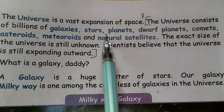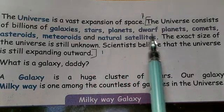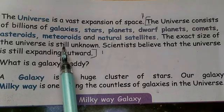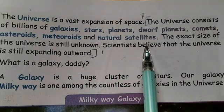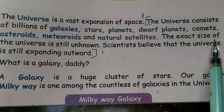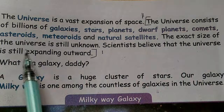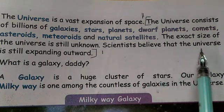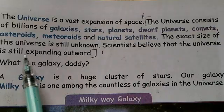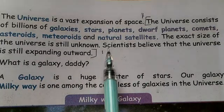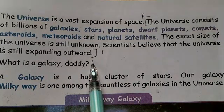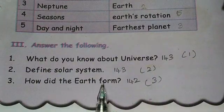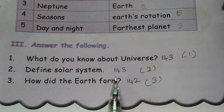The universe consists of billions of galaxies, stars, planets, dwarf planets, comets, asteroids, meteoroids, and natural satellites. The exact size of the universe is still unknown. Scientists believe that the universe is still expanding outward. That is the first question's answer.